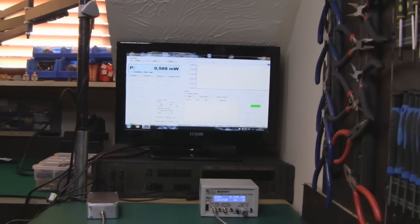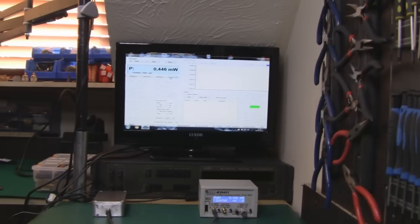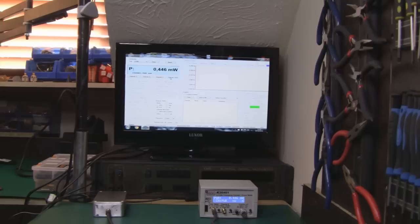Here we are with the counterfeit coax cable that I got off eBay. As you can see there, two meter length of it and we're losing over 150 milliwatts down the line, so extremely poor stuff this.